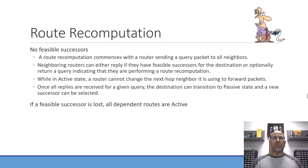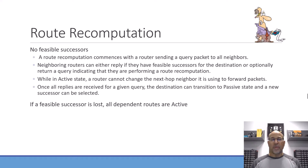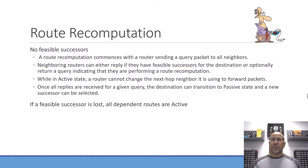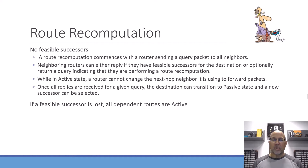When there are no feasible successors and a router is trying to figure out what happened or how to reach a destination, it sends out query packets. Neighbors respond by indicating whether they know the destination and have a possible successor. The router tries to determine the best or a new pathway to that destination. During this process, nothing changes in the routing table yet. Once all replies are received based on timers, the route can transition back to passive state with a new successor.